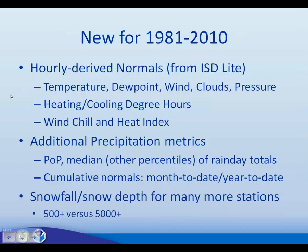What's new for 1981–2010: we have normals derived from hourly data from our ISD Light product — temperature, dew point, wind, clouds, and pressure. We'll be doing the hourly equivalent of heating and cooling degree days, called heating and cooling degree hours, and also producing normals of wind chill and heat index. We have additional precipitation metrics including the probability of precipitation, median and other percentiles of rain-day totals, and cumulative month-to-date and year-to-date normals. For snowfall and snow depth, we're doing this for many more stations — last time only 525 stations, but now over 5,000 stations.